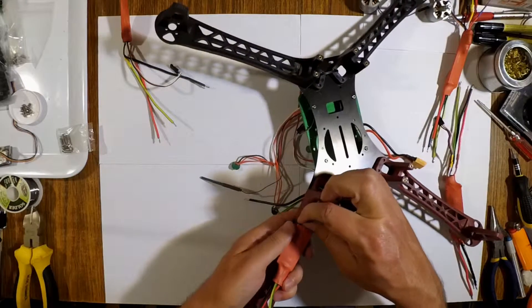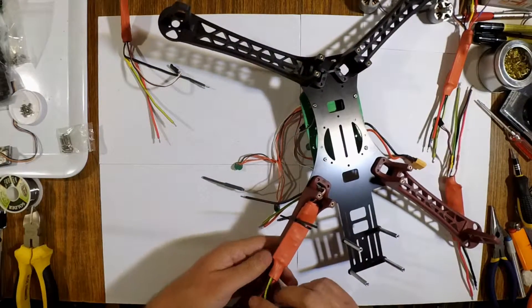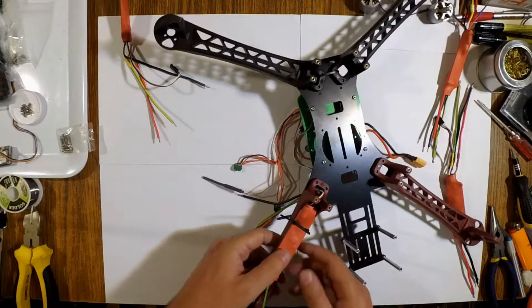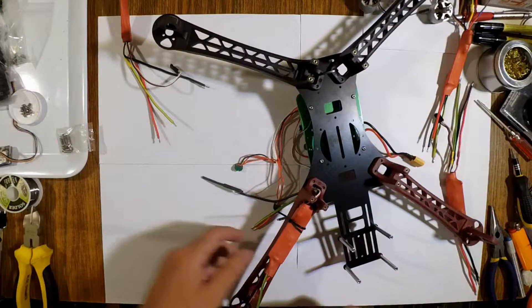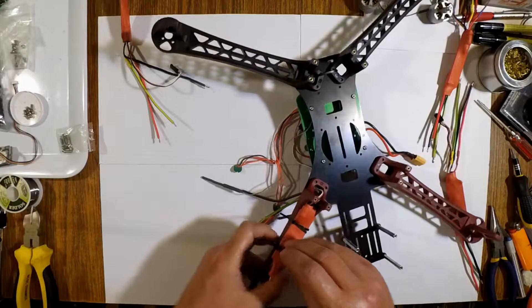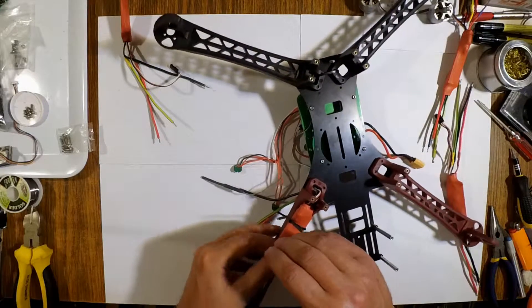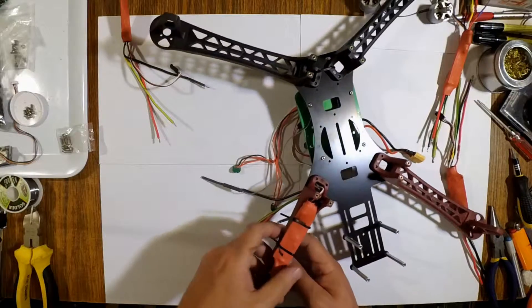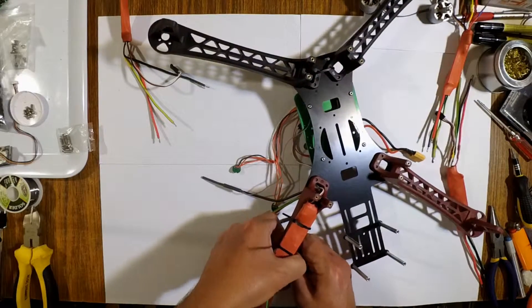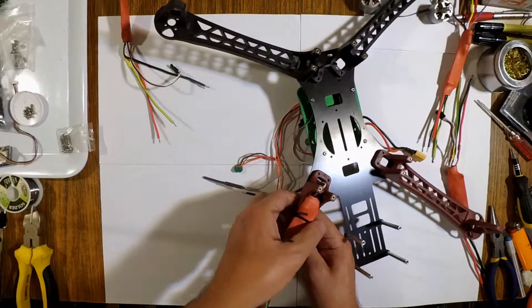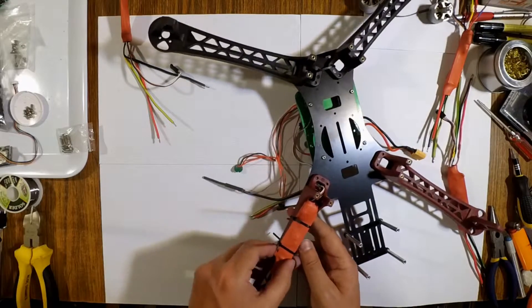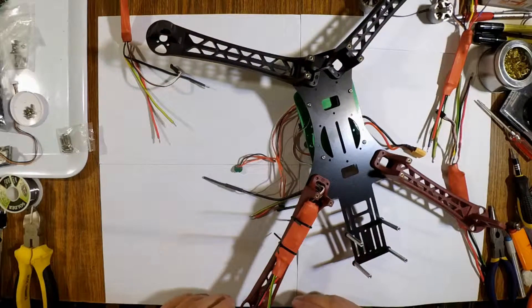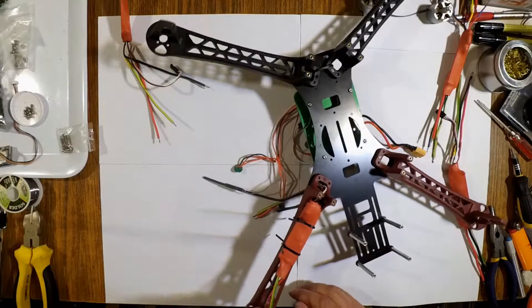There we go, I feel that's more than enough - don't need to yank it down all the way, it's just to hold it down there. There you go, that's going to hold the ESC nicely in place and I doubt it's going to go anywhere. I'm happy with that.